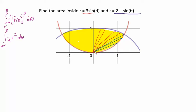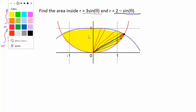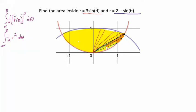We need to think about splitting this area: from zero to the intersection point to find the orange area down here, and then find the yellow area up here. We can see this is symmetric, so the orange area is going to be the same in the second quadrant as in the first quadrant. So what we can really do is just find the area in the first quadrant and then multiply by 2 — that's going to be the easiest way to do this.